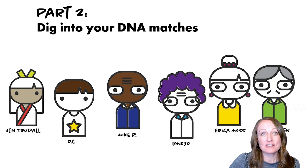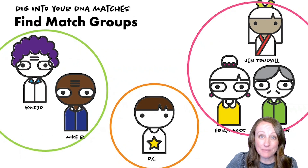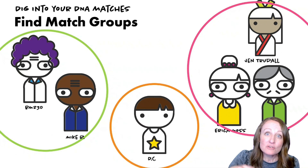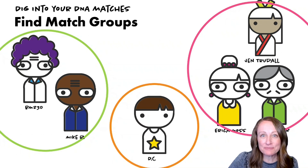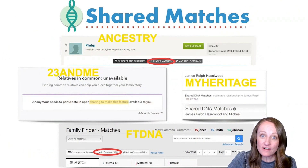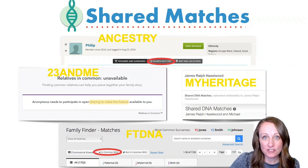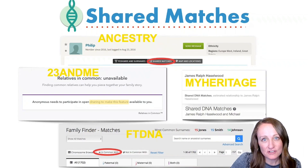The first step in using DNA matches for your family history is to create match groups — groups of people in your DNA match list who are all related to each other. You can then use those groups to more effectively investigate your relationships. The tool that makes this possible is called the shared matches tool. All five companies used for genetic genealogy have a shared matches tool of some kind.